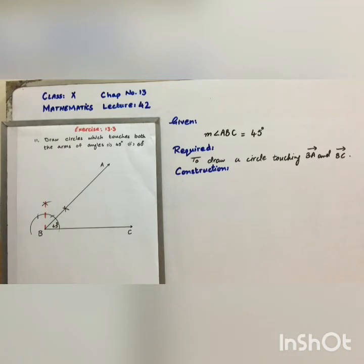We have to draw a circle which will touch ray BA which is the terminal arm of angle ABC and ray BC which is the initial arm of angle ABC.